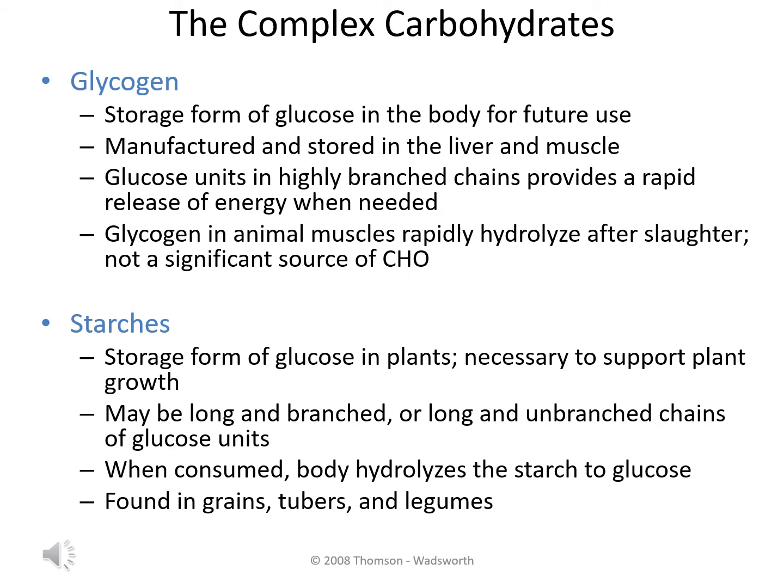The second category of complex carbohydrate is starch. Starch is the storage form of glucose that you find in plants. This starch is present in the plants to support the ability of the plant to grow as well as to retain its structure. Depending on the type of plant will determine if the glucose chains are going to be very long or short, and whether there's going to be a lot of branching or not. When we consume some type of a plant that contains starch, our body very easily can hydrolyze it or break it down into individual glucose units, which we can then use as a source of energy.